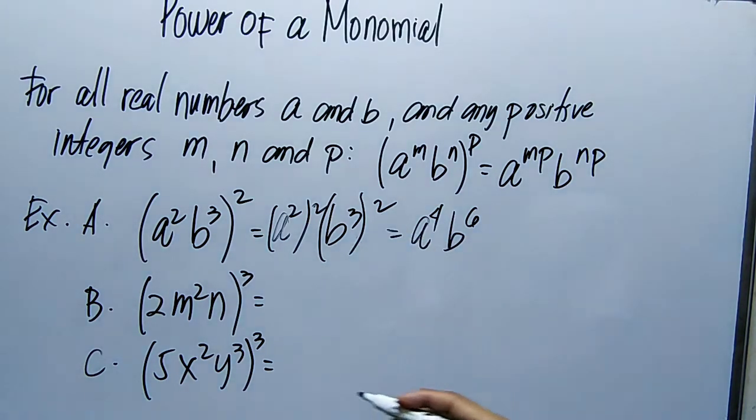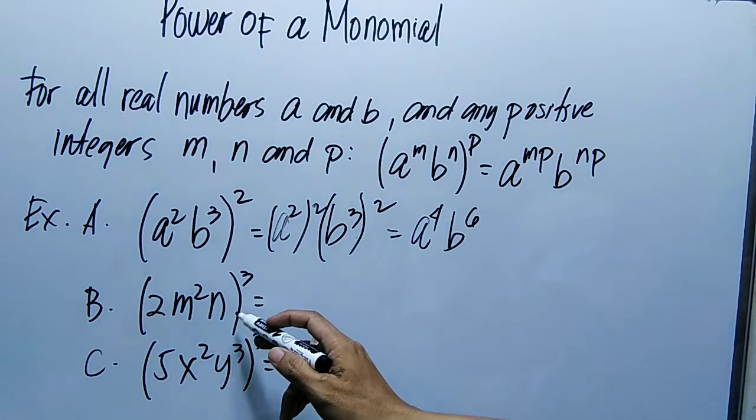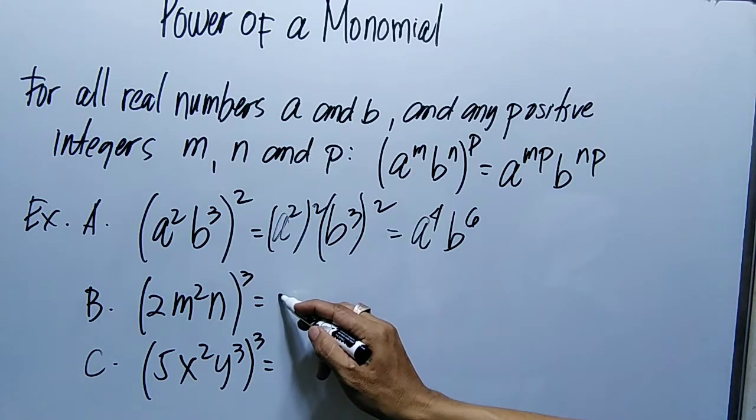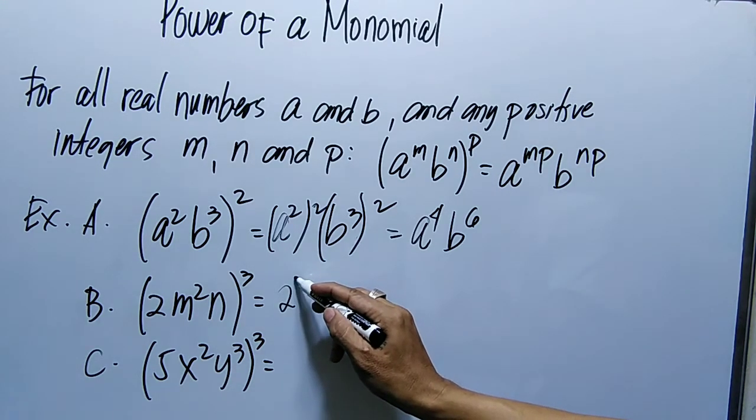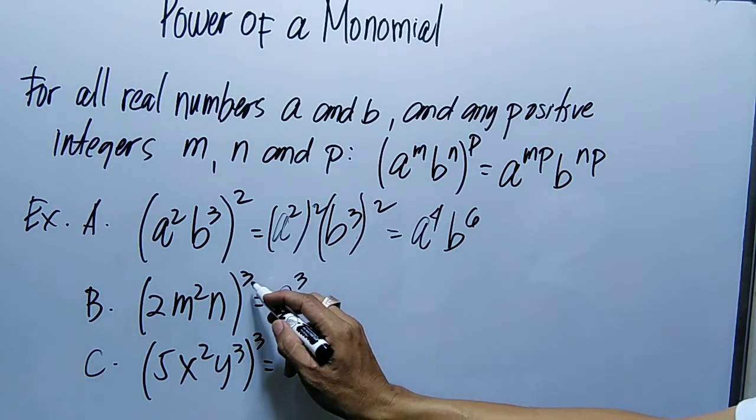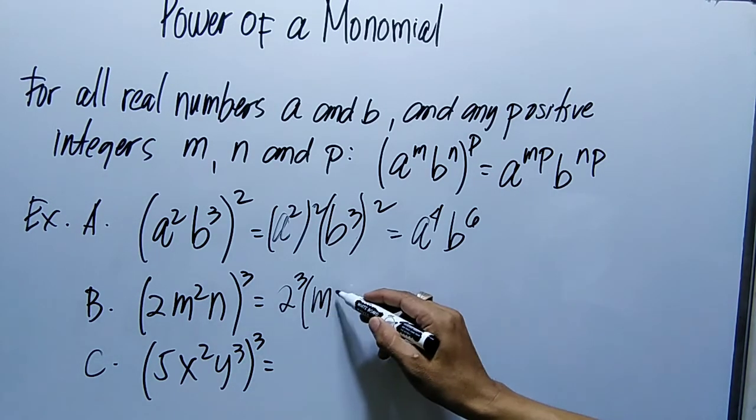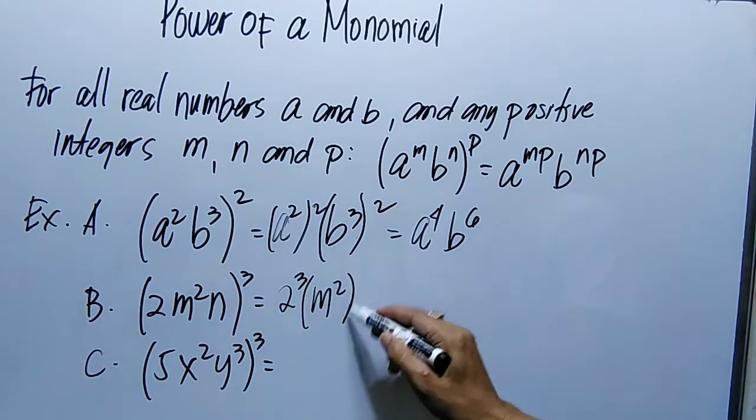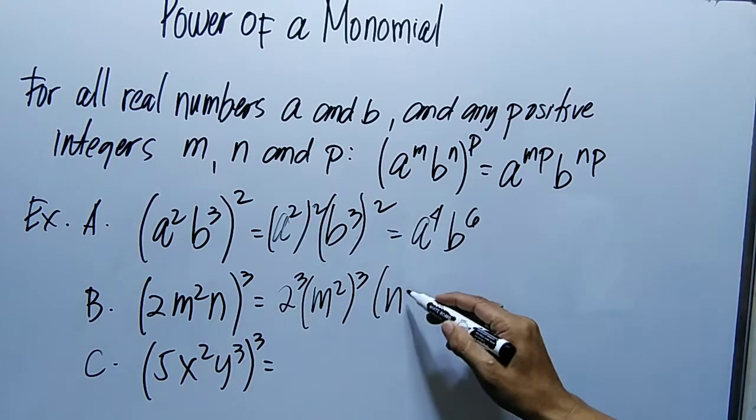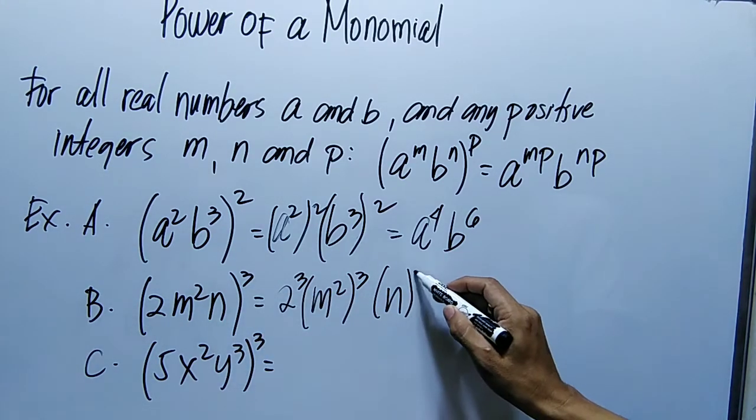So example letter B. The quantity of 2M squared N quantity raised to the power of 3. So ang gagawin natin dito, unahin muna natin si 2, then yung exponent natin na 3. Kasi lahat yan na members dito ay kailangan meron exponent na 3. Then si M squared, then si N, wala sa exponent dito, so lagyan natin ang exponent na 3.